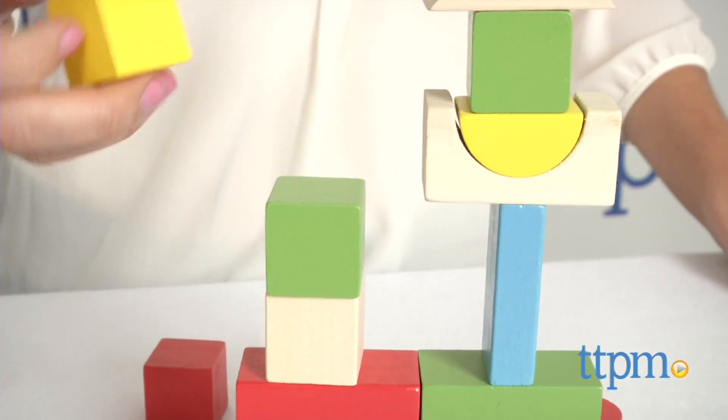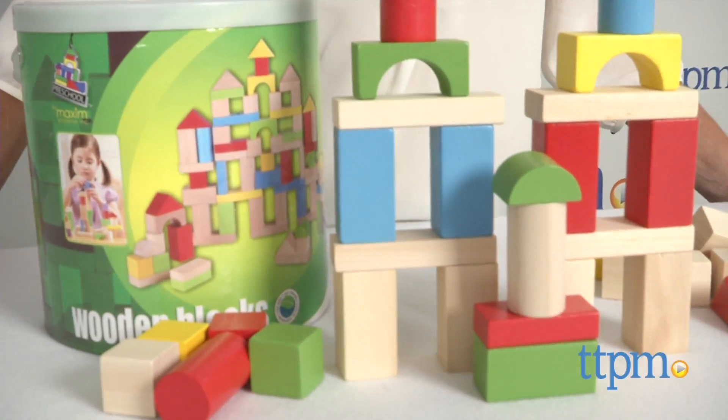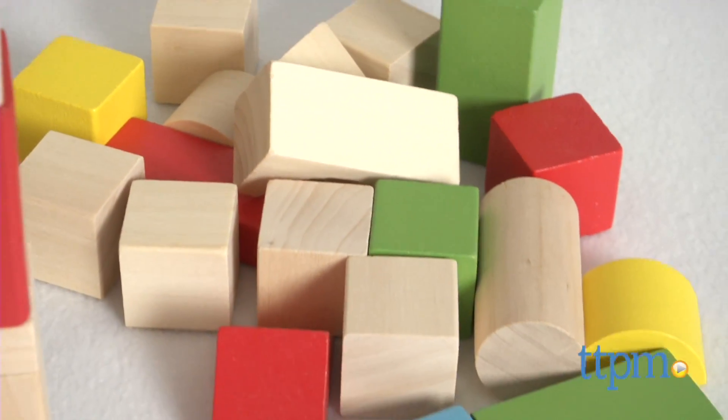Preschoolers can get building with this 75-piece wooden block set. Hi, I'm Tammy with TTPM. Part of Maxim Enterprise's preschool collection, this set includes solid wooden blocks in eight different shapes and sizes, from cubes to cylinders to archways.